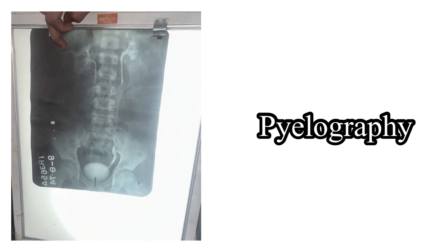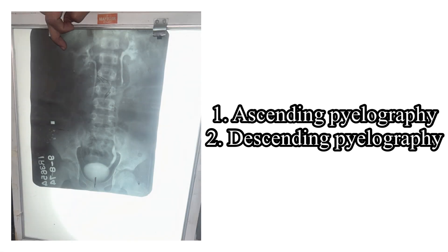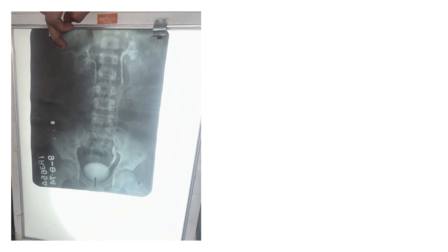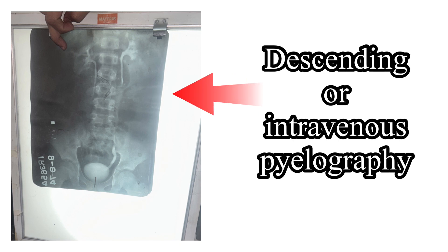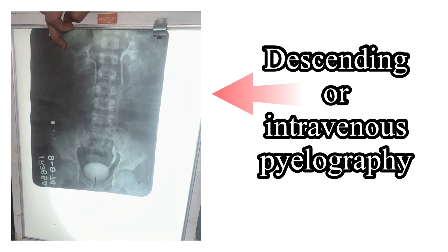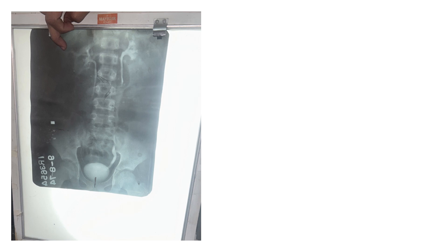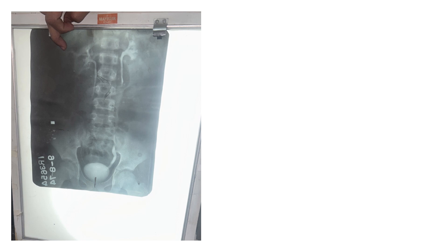Pyelography is done to examine the urinary tract, and the radiograph obtained is known as a pyelogram. Pyelography may be of two types: descending or intravenous pyelography, and ascending pyelography, also known as retrograde pyelography. The X-ray seen here is that of descending pyelography, also known as intravenous pyelography, because the radio-opaque dye is injected intravenously. The course of the ureter is clearly seen up to the urinary bladder, which appears oval or triangular in shape.